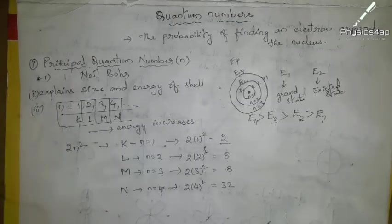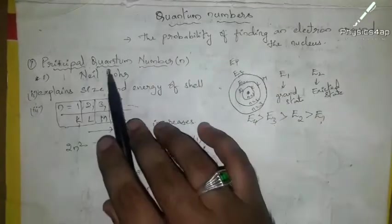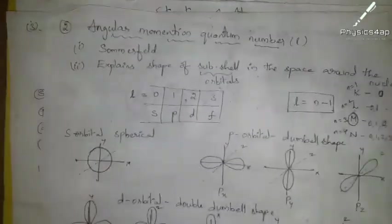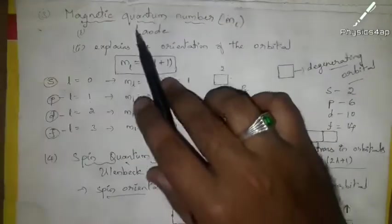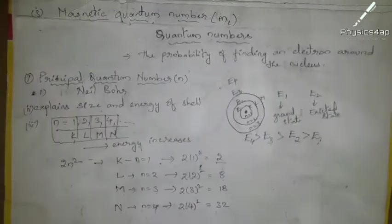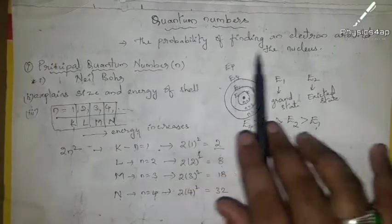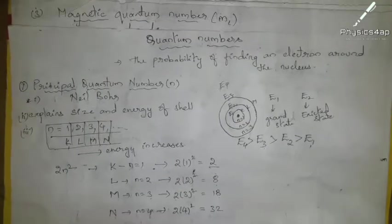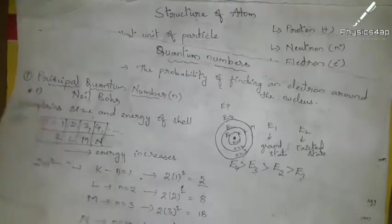Hello everyone, welcome to my channel physics4AP. In part 2 we were discussing about the quantum numbers — the principal quantum number, the angular momentum quantum number, and the magnetic and spin quantum numbers. These quantum numbers are used to find the maximum probability of finding an electron around the nucleus. Now we are going to discuss about the electronic configuration.